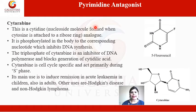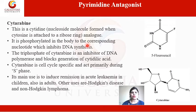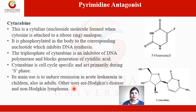The next drug of the pyrimidine antagonist class is cytarabine. This is a cytidine — a nucleotide molecule formed when cytosine is attached to a ribose analog. These are cytosine sugar derivatives. Cytarabine is phosphorylated in the body to the corresponding nucleotide, which inhibits DNA synthesis. The triphosphate of cytarabine is an inhibitor of DNA polymerase and also blocks the generation of cytidylic acid. Cytarabine is cell cycle specific and acts primarily during the S phase. Its main use is to induce remission in acute leukemia in children and adults. Other uses include Hodgkin's disease and non-Hodgkin's lymphoma.